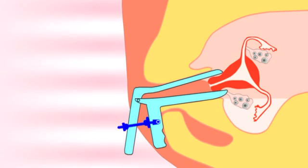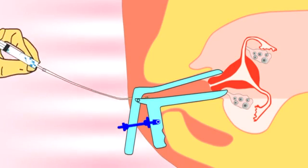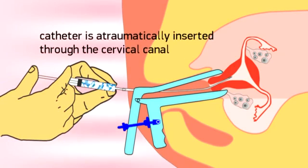Next, the insemination catheter is automatically inserted through the cervical canal into the upper part of the uterine cavity.